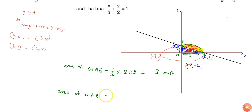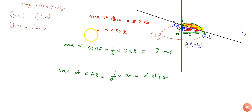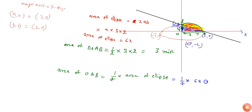The area of the curve OAB is nothing but 1 by 4th of the area of the ellipse. The area of an ellipse is given by pi times A times B. Here A is 3 and B is 2, so the area of the ellipse will be 6 pi. Therefore, the area of curve OAB will be 1 by 4 into 6 pi, which is 3 pi by 2.